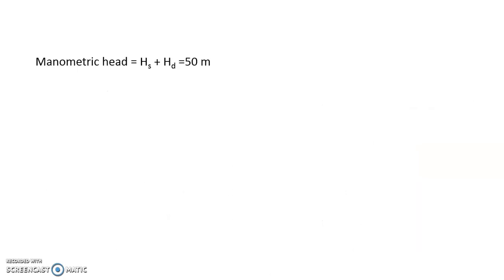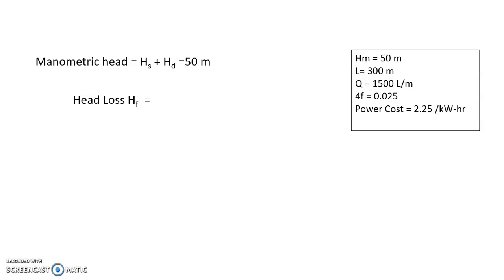So there is a manometric head which is suction head plus delivery head which is given as 50 meters but this is not the total head. For a given value of manometric head of 50 meters, length being 300 meters, discharge 1500 liters per minute - it's not in meter cube per second, we are supposed to convert it - and 4f. What is 4f? 4f is the friction factor where f is coefficient of friction. 4f being 0.025, we can apply the Darcy-Weisbach equation here to calculate head loss.